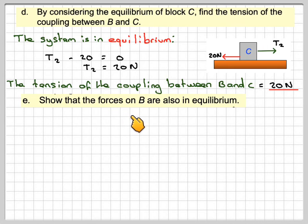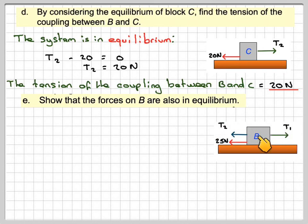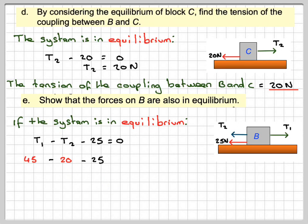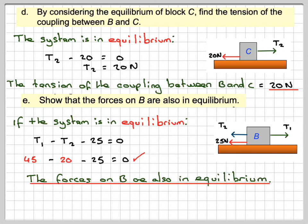Then it just says, show that the forces on B are also in equilibrium. Drawing the diagram for B, we have T1, T2 and 25 newtons friction. If the system is in equilibrium because it's moving at constant speed, we can say T1 minus T2 minus 25 equals 0. We've got T1 equal to 45 and T2 equal to 20, so 45 minus 20 minus 25 equals 0. 45 minus 20 gives 25, and 25 minus 25 gives 0. Therefore, the system is in equilibrium for B as well, which is what we expected.